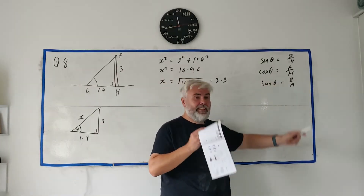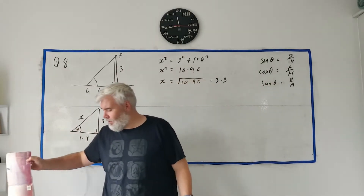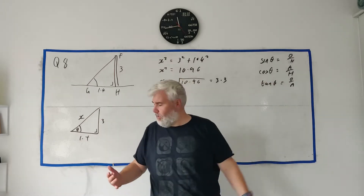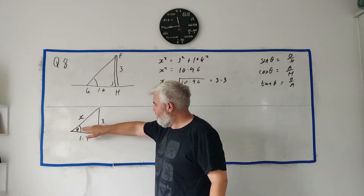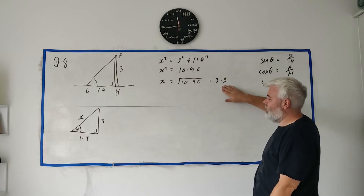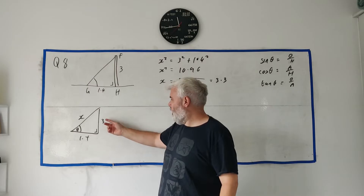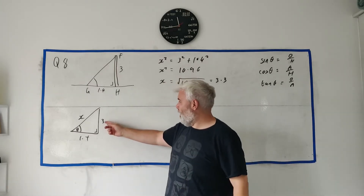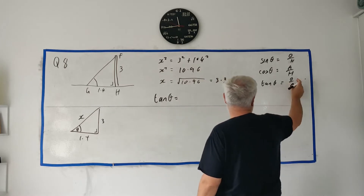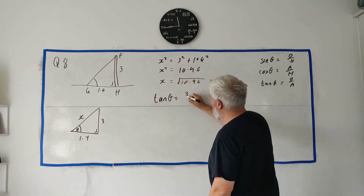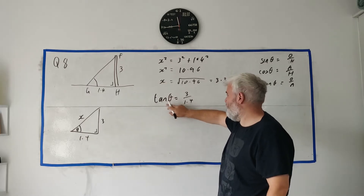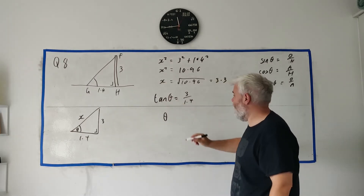You will find the sine, cosine, and tangent formulas in your tables book. Here we know an angle, the opposite, and the adjacent. We'll use tangent because we have the opposite and adjacent without rounding off. So tangent of theta equals the opposite, which is 3, divided by the adjacent, which is 1.4.